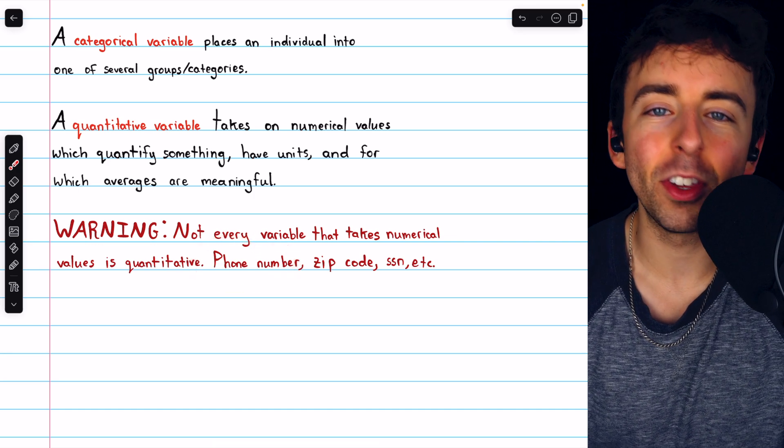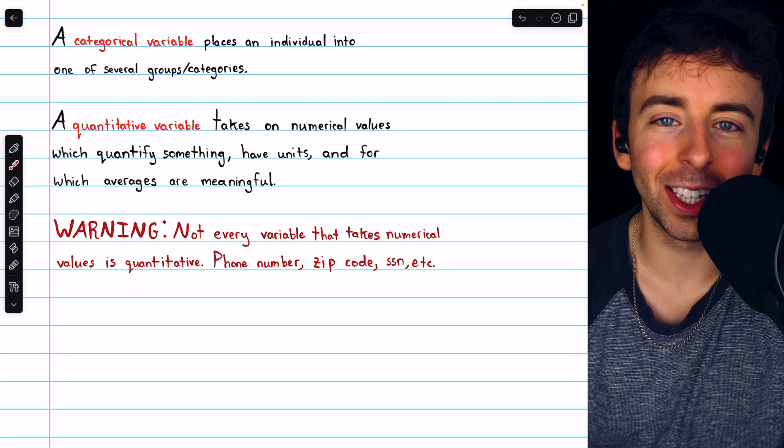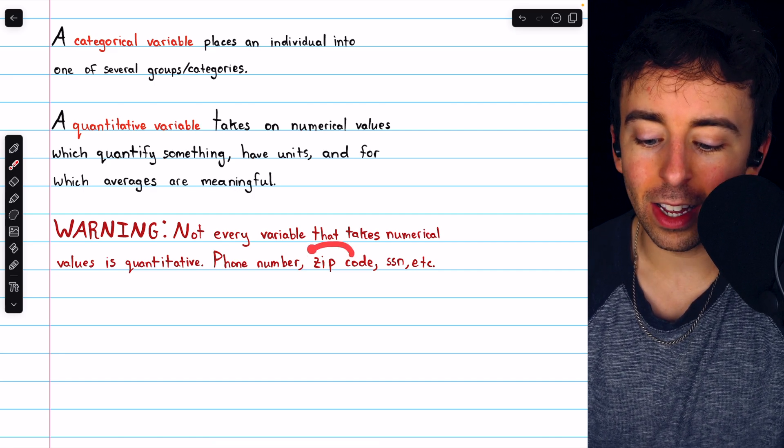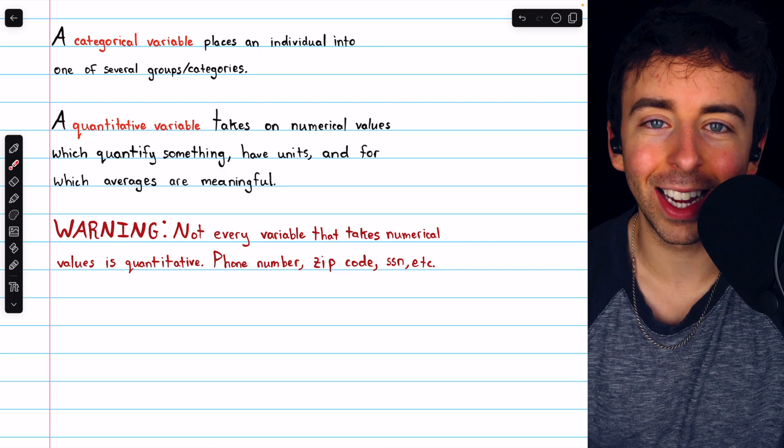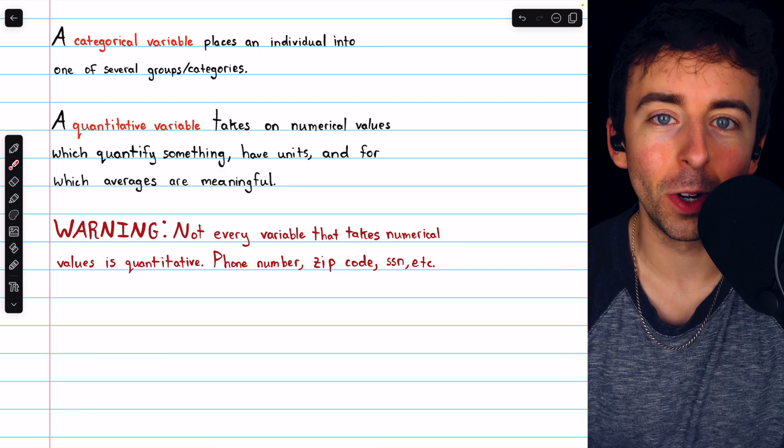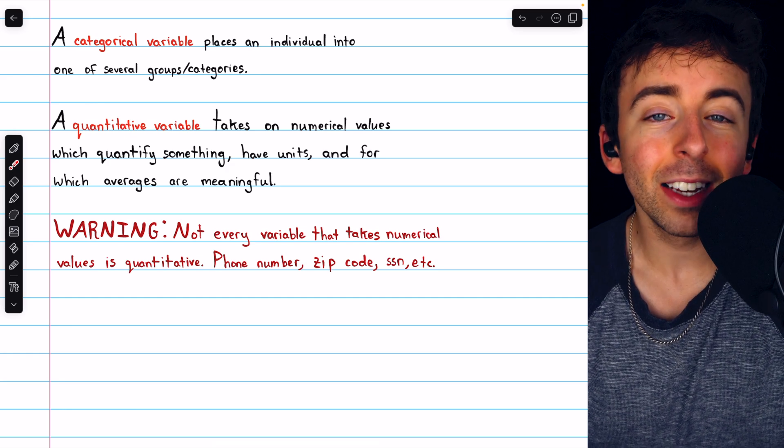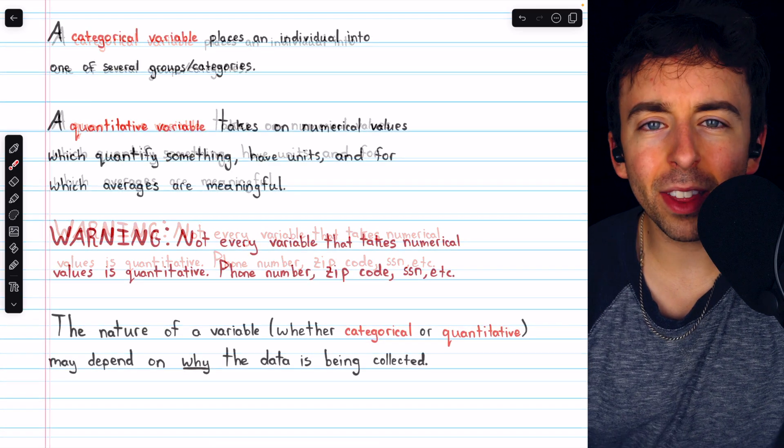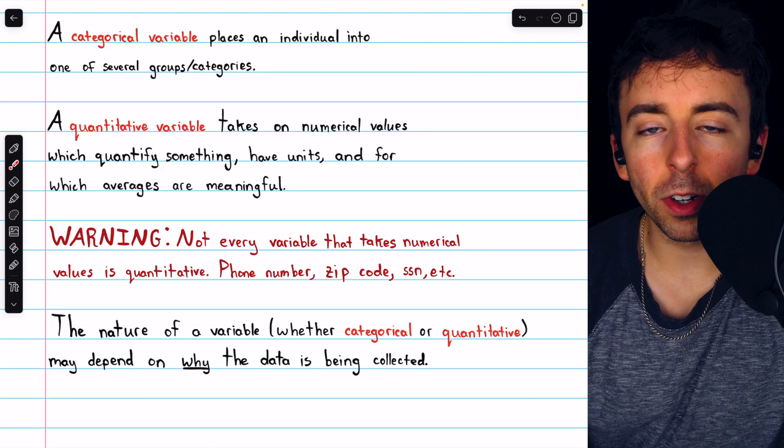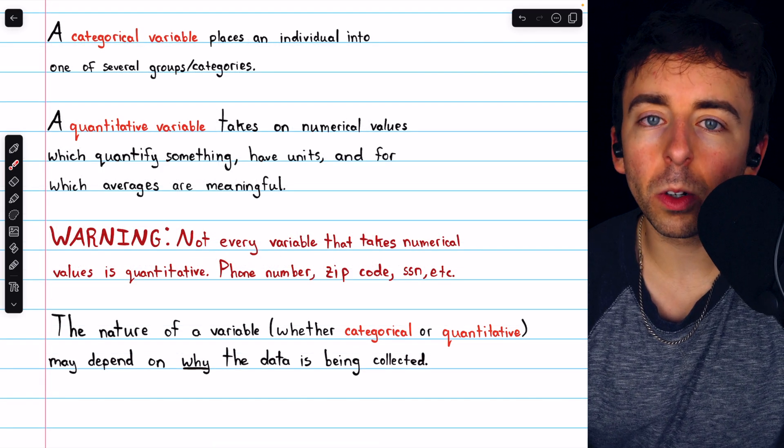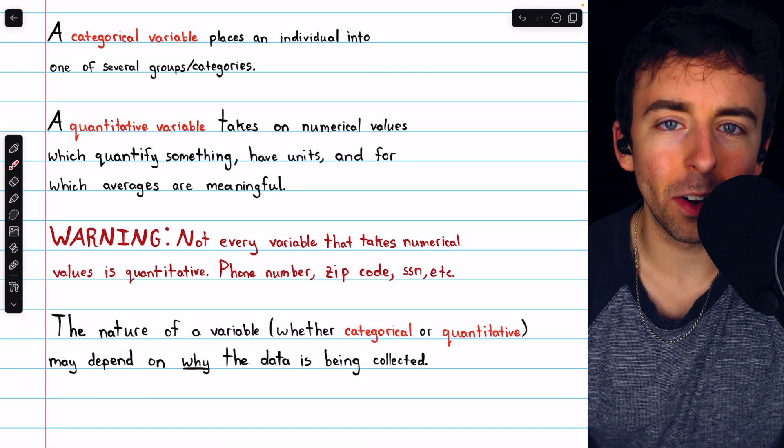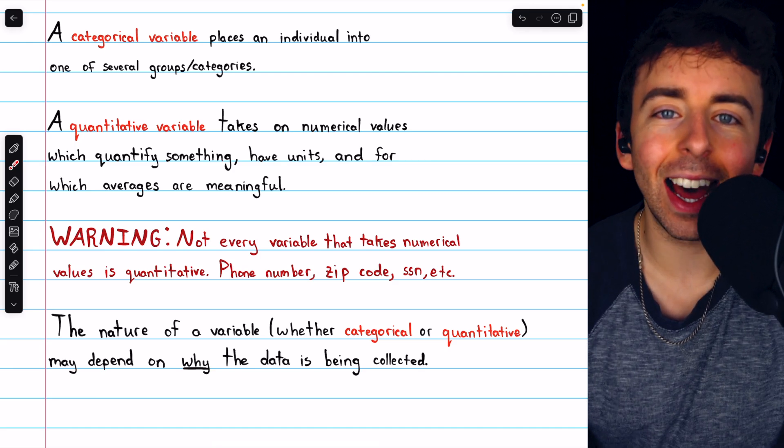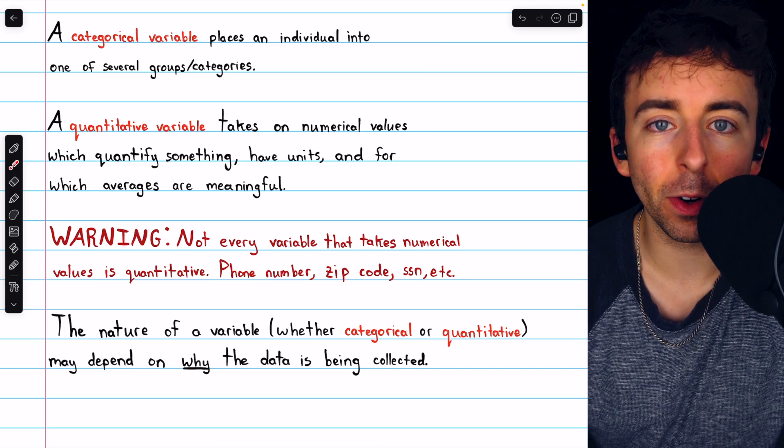Someone's phone number does not have units. It wouldn't make sense to calculate the average phone number of students in a classroom. The zip code is not quantifying anything. There are no zip code units. These aren't quantitative variables, despite the fact that they do take on numerical values. To make things even more difficult, whether or not a variable is categorical or quantitative doesn't depend purely on what it is. It also depends largely on why the data is being collected in the first place.